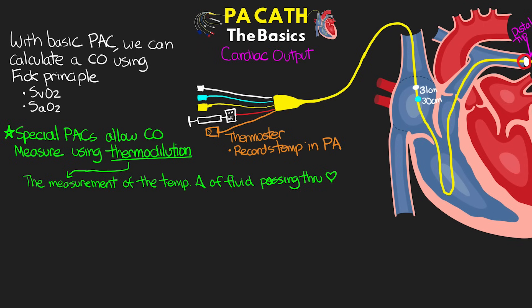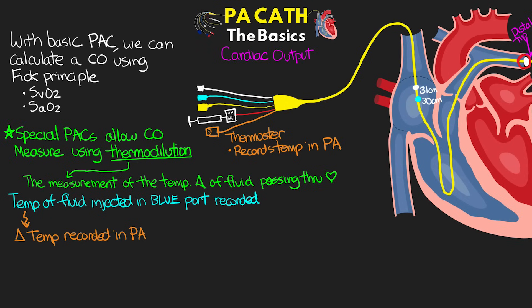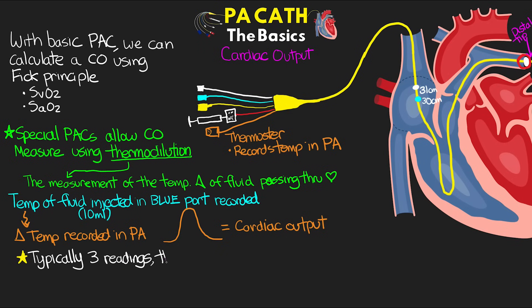The theory of thermodilution: the better someone's cardiac output, the faster their blood flows. If we inject a cold fluid, there is less time for it to warm before reaching the thermistor — so we see less of a temperature change. The temperature of fluid injected into the blue right atrial pressure port is recorded, and the change in temperature in the pulmonary artery generates a thermodilution curve from which cardiac output is calculated. This is done with 10 mL of fluid, and typically three readings are averaged.